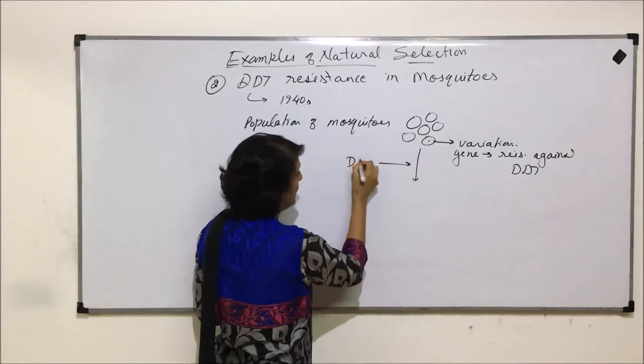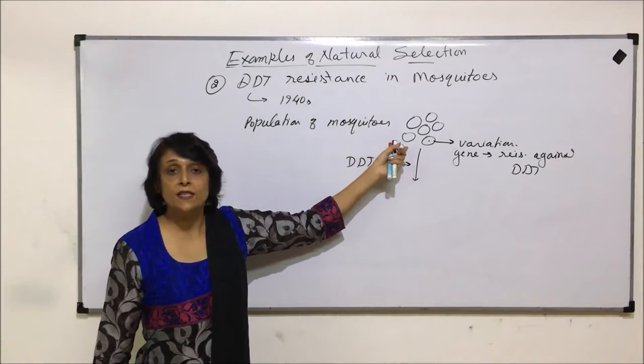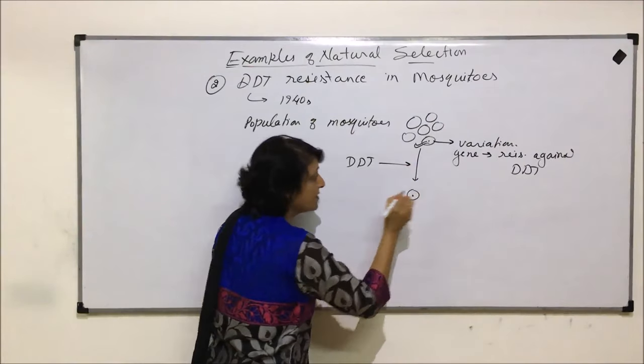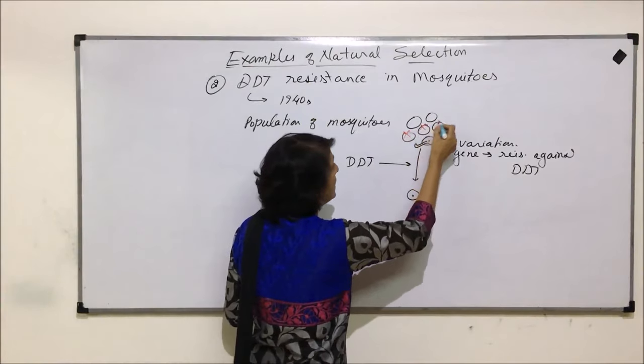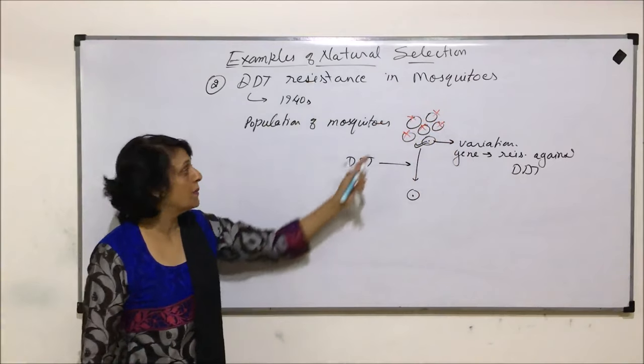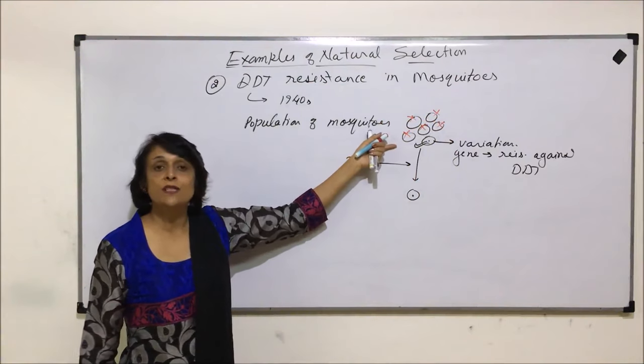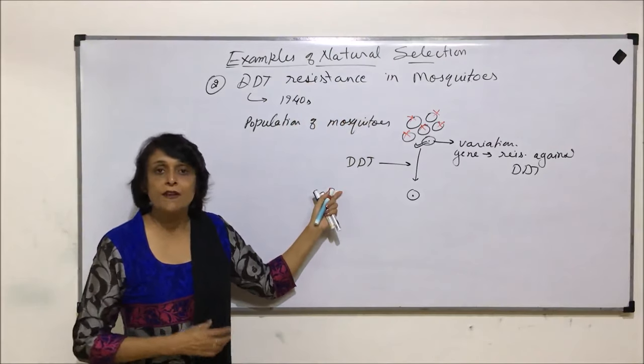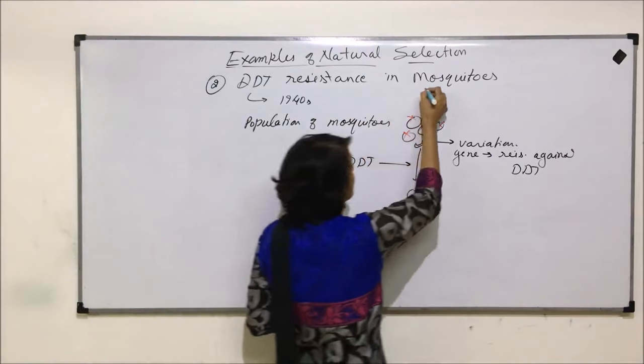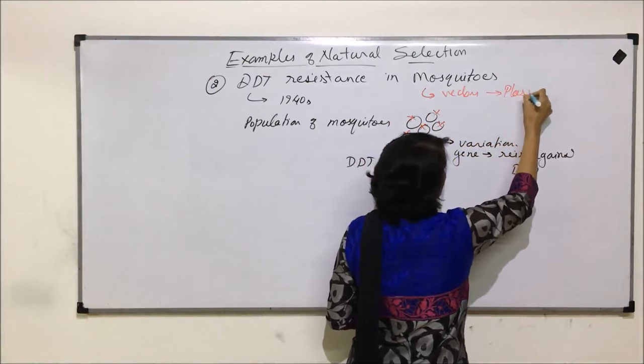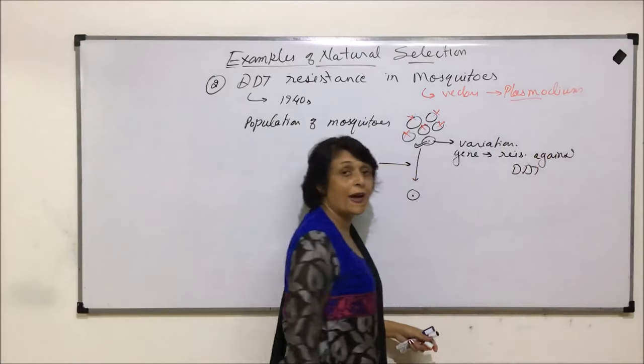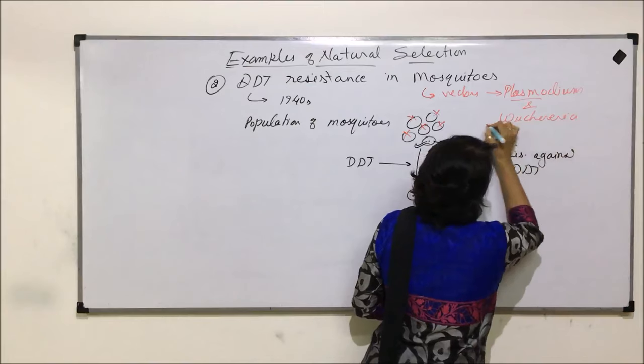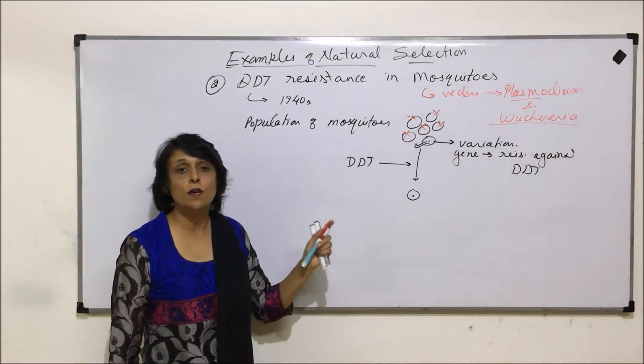Now when DDT was used, the situation changed. From these existing varieties of mosquitoes, this one had the resistant gene so it must have survived, and all other mosquitoes which had nothing to protect them from DDT must have died. After DDT use, majority of mosquitoes died and that's why we said that DDT was very effective in controlling mosquitoes. Mosquito control is very important because these are vectors for transmitting the malarial parasite and even for the filarial worm, Wuchereria, so destroying mosquitoes was very central.